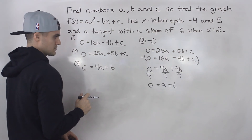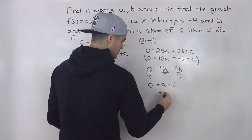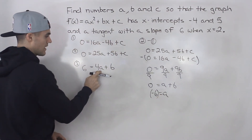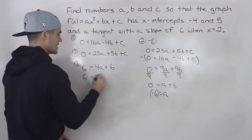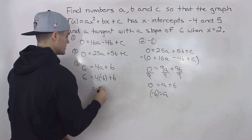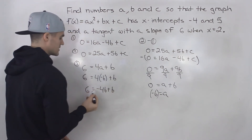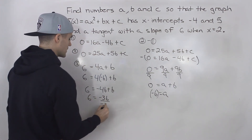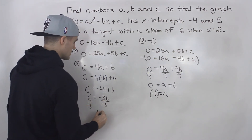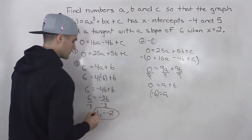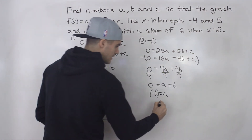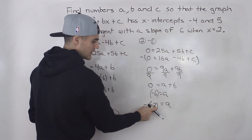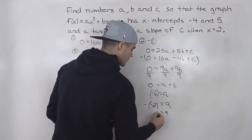From a plus b equals 0, we get a equals negative b. Substituting into 6 equals 4a plus b: 6 equals 4 times negative b plus b, which gives 6 equals negative 4b plus b, so 6 equals negative 3b. Dividing both sides by negative 3, b equals negative 2. And if b is negative 2, then a equals negative b equals negative negative 2, so a equals positive 2.